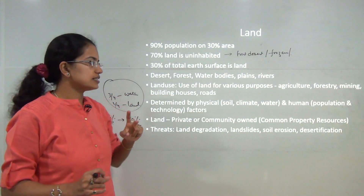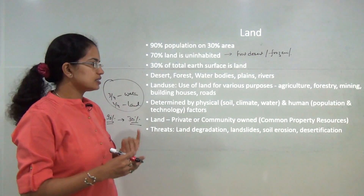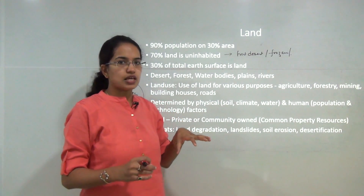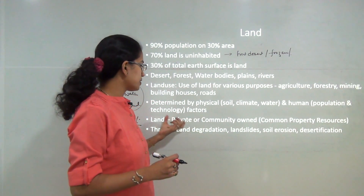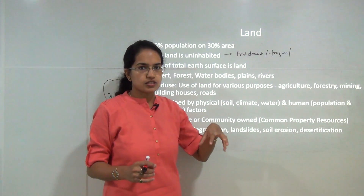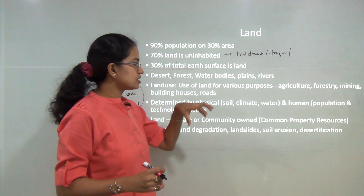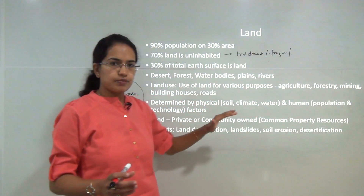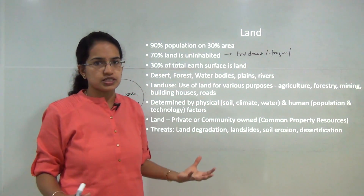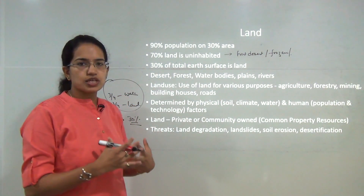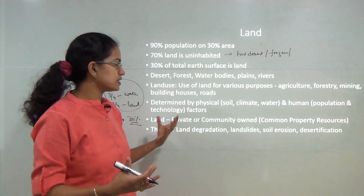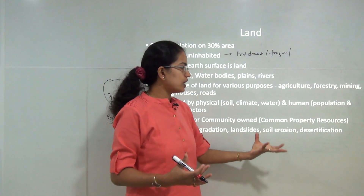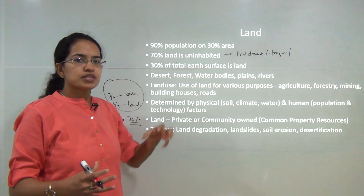Under human factors, the two primary things are population and technology. Feasibility of technology is more important than mere availability. When technology is feasible for a particular region, human intervention can lead to construction of bridges, tunnels, and airports. However, basic soil quality, climate, and water conditions are the prerequisites that determine what kind of activity can flourish in an area.